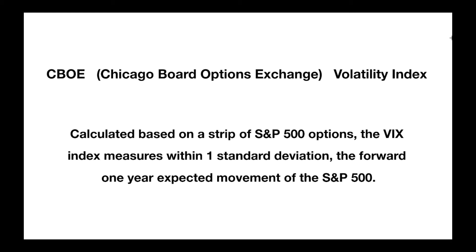A basic definition is as follows: calculated based on a strip of S&P 500 options, the VIX index measures within one standard deviation the forward one-year expected movement of the S&P 500. That's really all it is. For all of the mention in financial blogs and the financial media, it's really just a representation of forward expected returns on the S&P 500 based on activity in the options market.